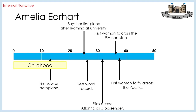Here's the internal narrative, and once again it's Amelia Earhart. Think about what the scale allows me to represent. The childhood is a duration of time, therefore it's positioned on the scale as a bar. Each of those arrows happened at a certain age, and because we have that scale, we can say what that age was.